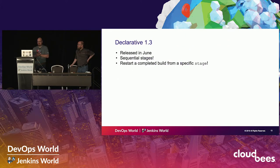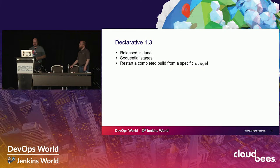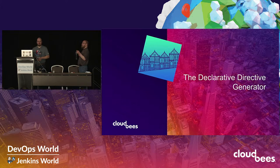1.3 came out in June. That's where we added sequential stages - going to deep dive into that a bit later on. We also added the ability to restart a build from a specific stage, also going to do a deep dive into that as well.